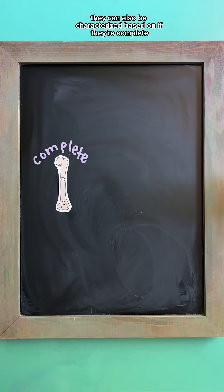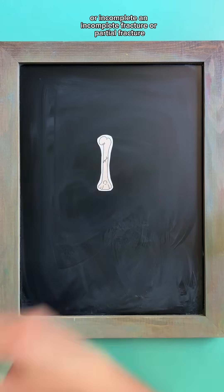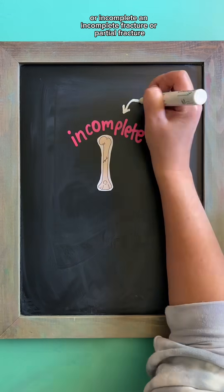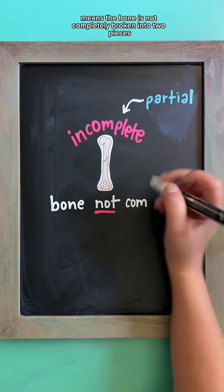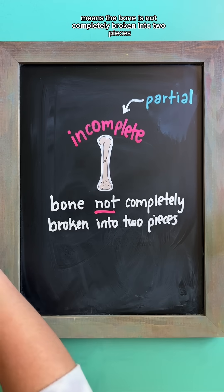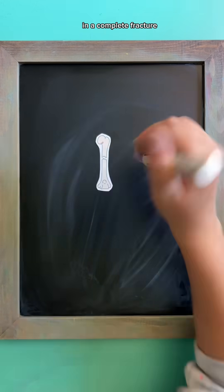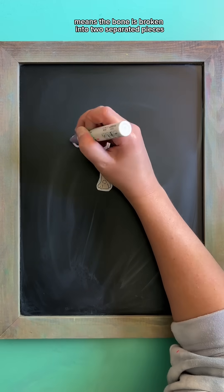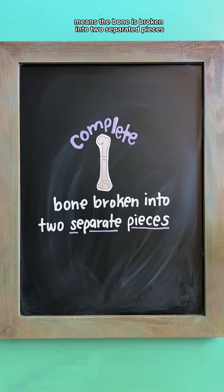Fractures can also be characterized based on if they're complete or incomplete. An incomplete fracture, or partial fracture, means the bone is not completely broken into two pieces — it's still partially intact. A complete fracture means the bone is broken into two separated pieces.